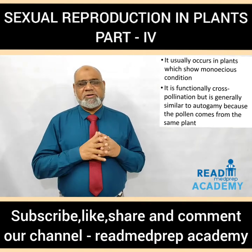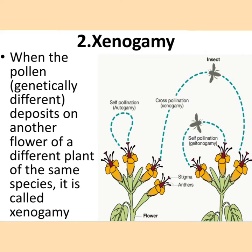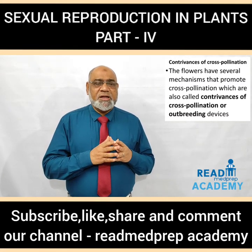What is xenogamy? When the pollen which is genetically different deposits on another flower of a different plant of the same species, it is called xenogamy. Here you can see on the left side there is a plant with flowers and on the right side there is another plant with flowers, and the pollen from one flower of a plant is transferred to the stigma of the flower of another plant.